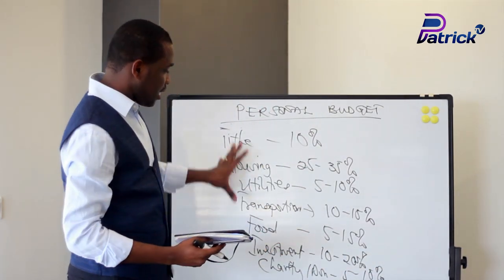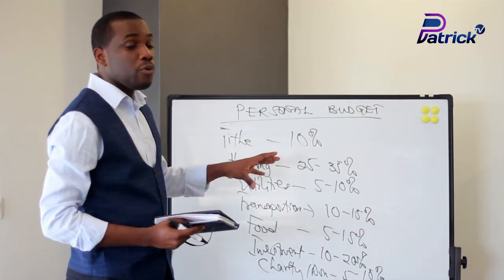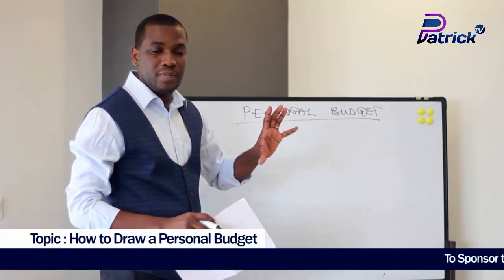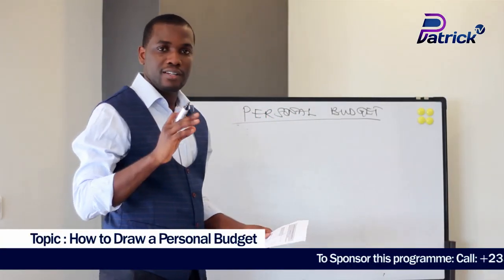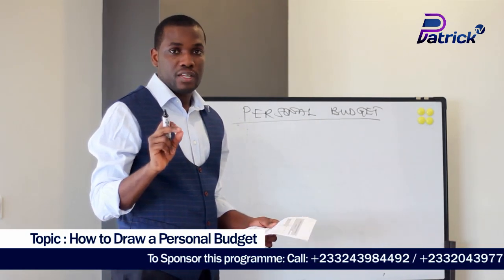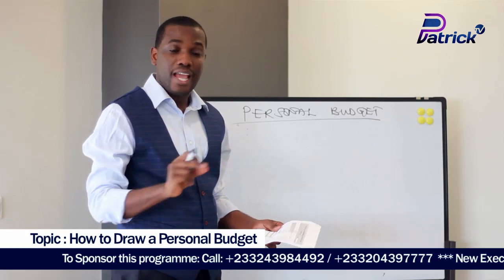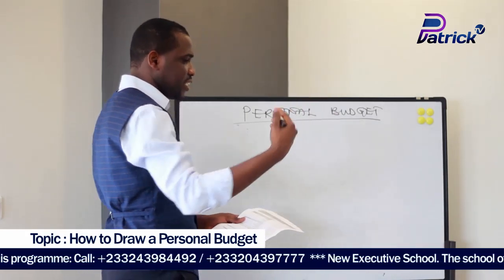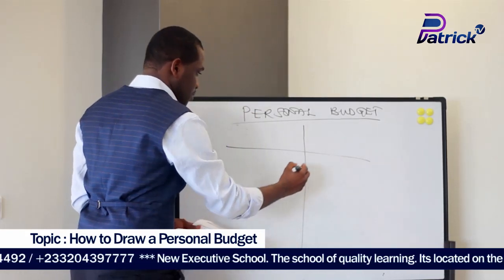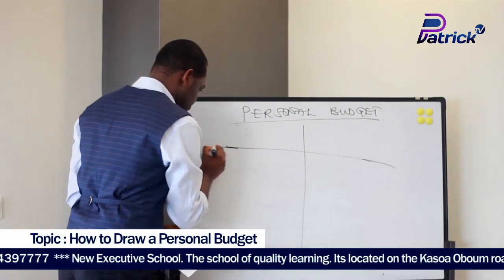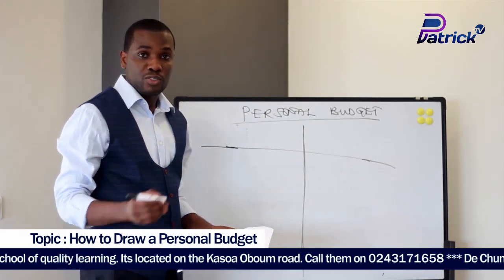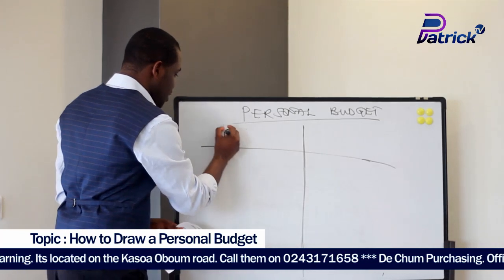Now when you understand these parameters or preamble, we are going to use them to draw the budget. Let's go to the proper personal budget. If you are watching, it is not difficult — everybody can do it. Just take a simple piece of paper and draw a line like this. You don't need to have learned accounting to do this. Just write here: Income and Expenditure.